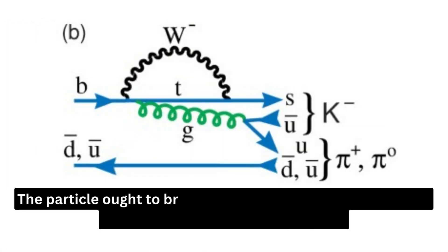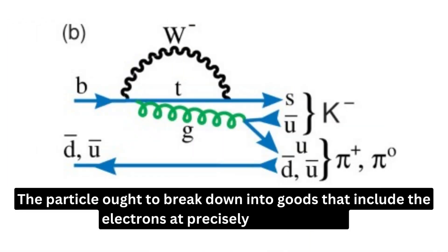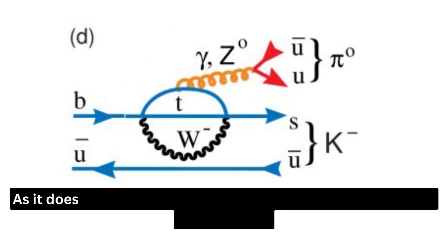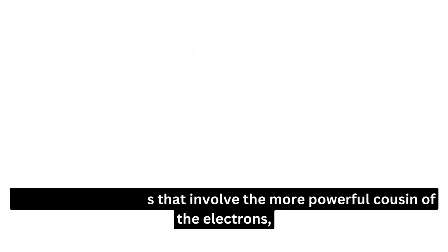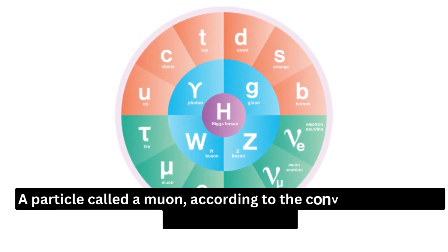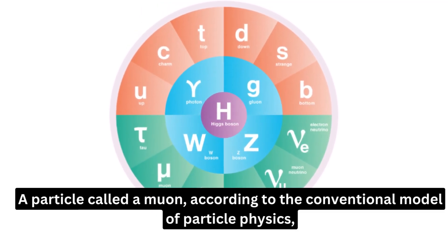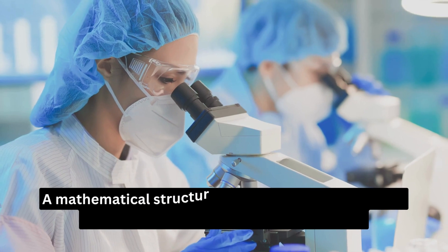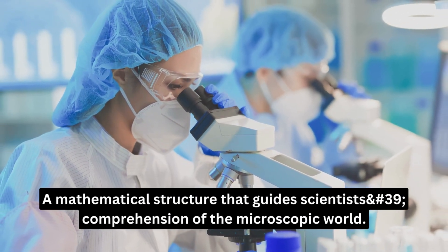The particle ought to break down into goods that include electrons at precisely the same rate as it does into goods that involve the more powerful cousin of the electron, a particle called a muon, according to the conventional model of particle physics, a mathematical structure that guides scientists' comprehension of the microscopic world.